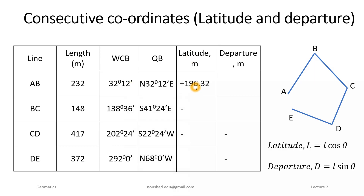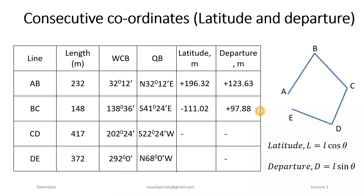You will get the value of latitude as +196.3, which is positive because it is in the first quadrant — north direction. Departure = 232 × sin(32°) = +123.63, positive because it is in the east. The second line BC gives latitude = −111.08, negative because of the south direction. The departure is positive because of the east. The third line gives a negative latitude (south) and negative departure (west).